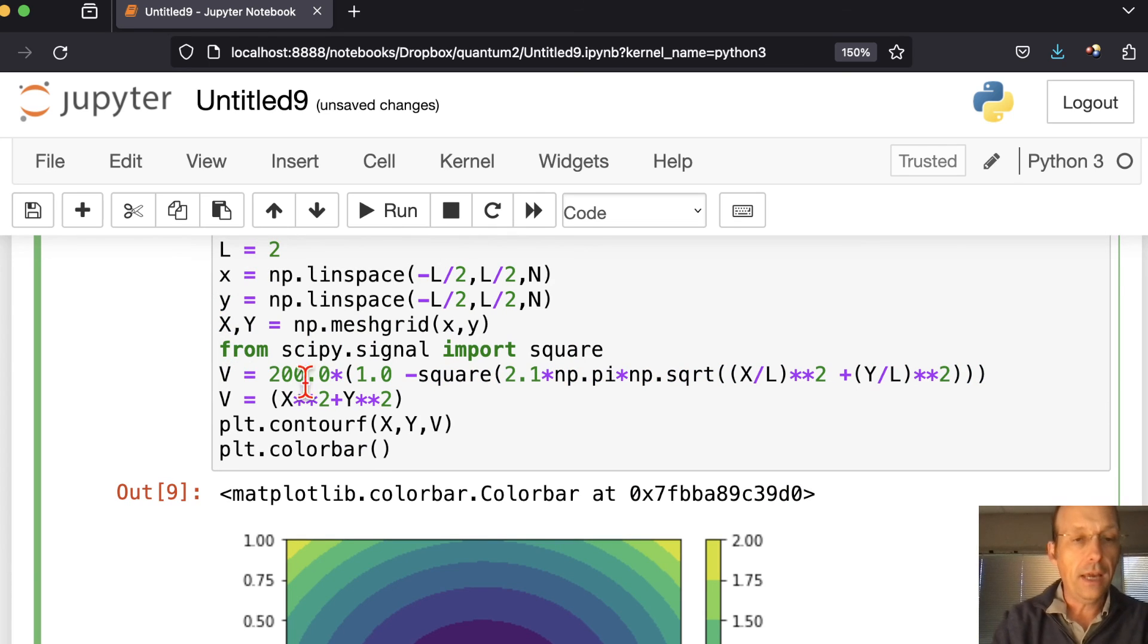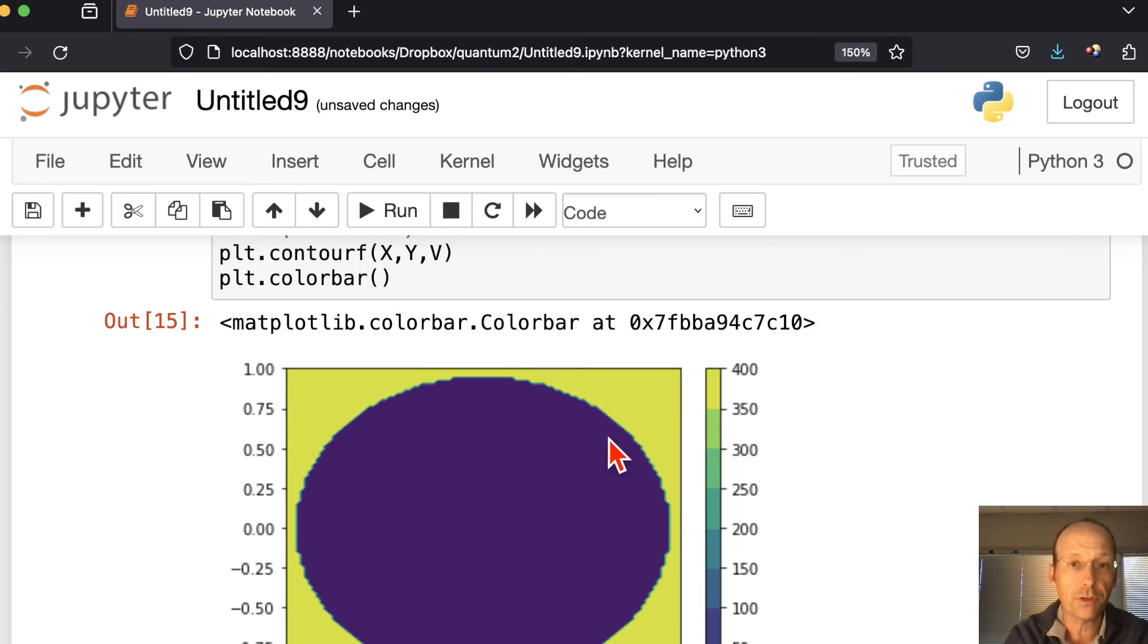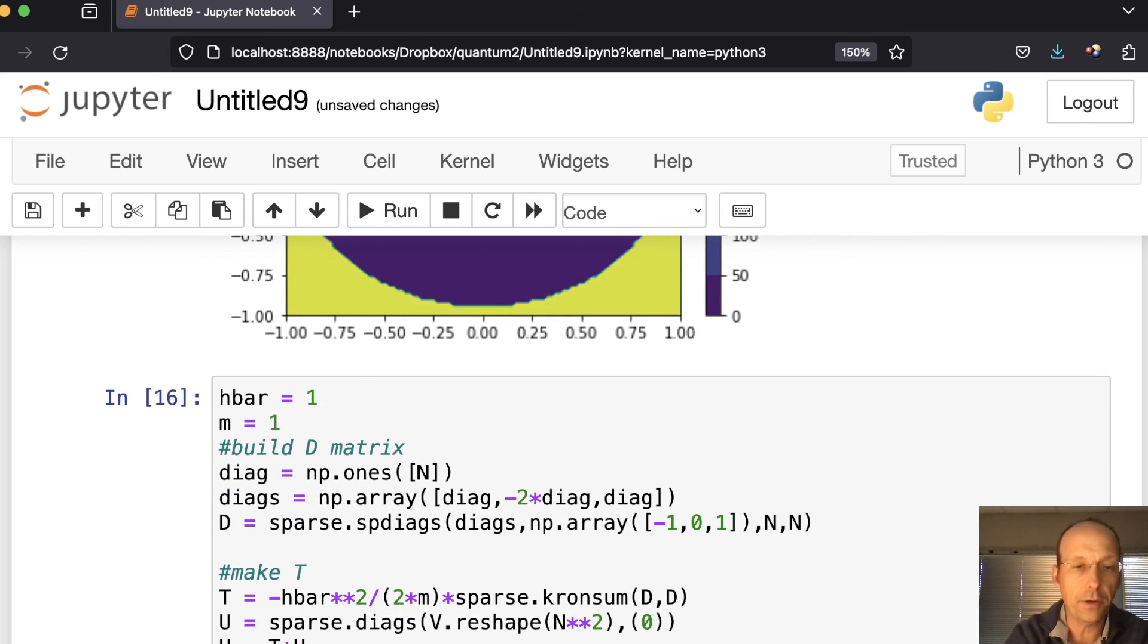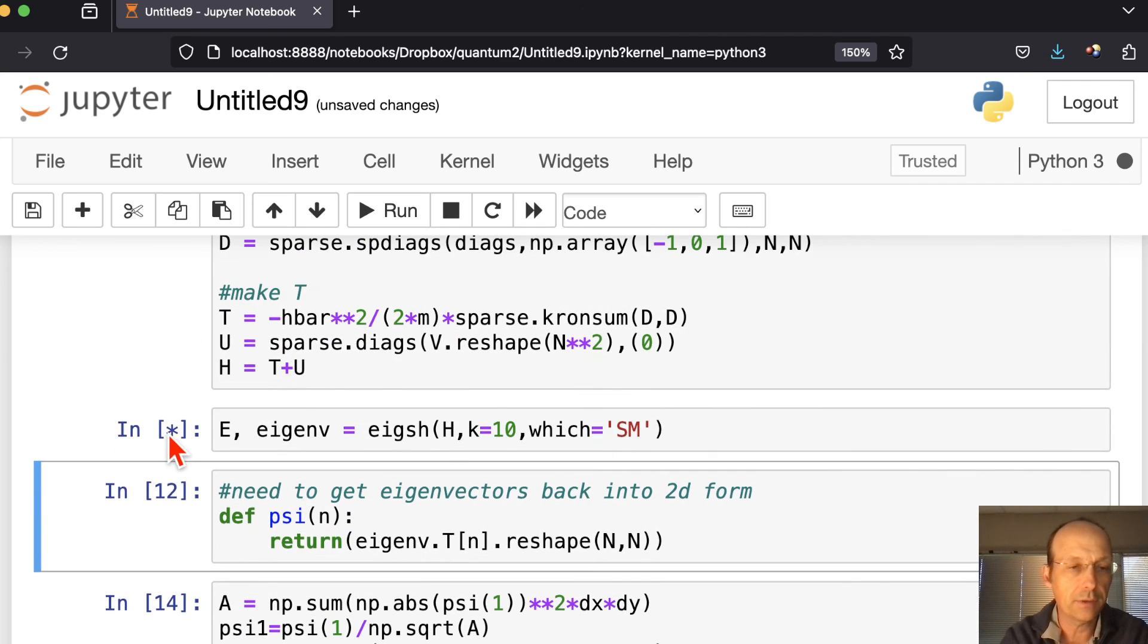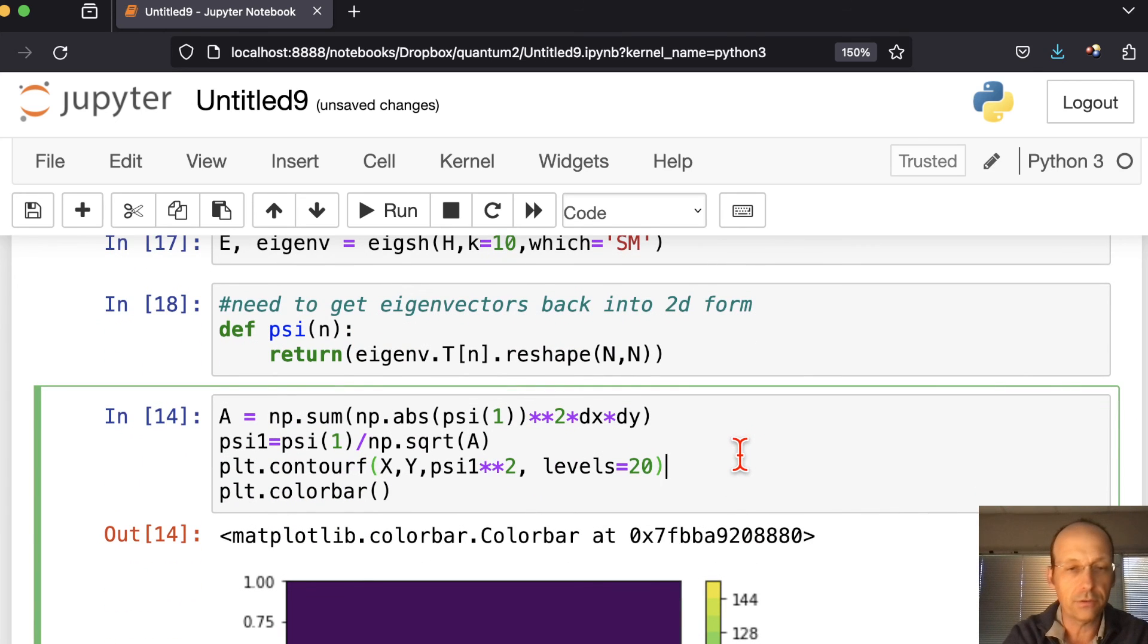So I'm going to take this off. And I'm going to comment out that one. This is a 200 high walls. And then the square stuff. I don't really know what is going on here. But it's using this square from scipy.signal. But if I plot that, you can see I have zero potential in here. And then these high walls over there. Let's rebuild the matrix. Let's refine the eigenvalues.